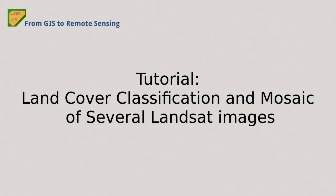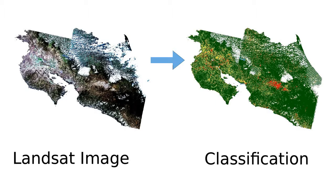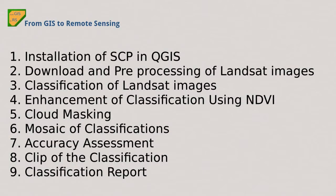Hi, I'm Luca Congedo and you're watching From GIS to Remote Sensing. This tutorial is about the land cover classification mosaic of several Landsat images. In particular, we are going to classify the area of Costa Rica, which is a country of about 51,000 square kilometers. We'll install the Semi-Automatic Classification plugin in QGIS, download and preprocess the Landsat images, classify them and enhance the classification using the NDVI vegetation index, remove clouds and mosaic the classifications, and finally perform the accuracy assessment and classification report calculating the area of each land cover class.